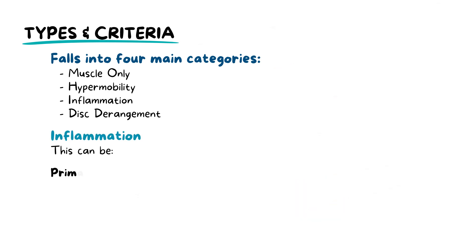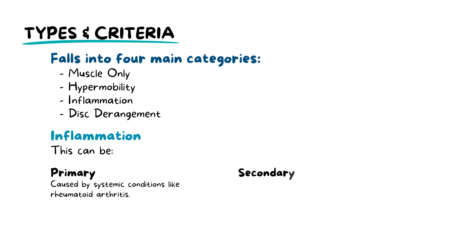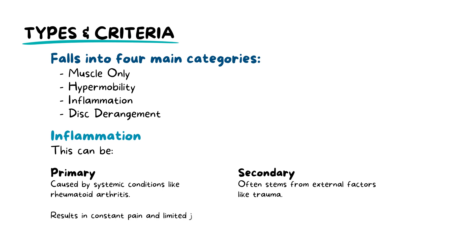Inflammation can be primary, caused by systemic conditions like rheumatoid arthritis, or secondary, due to external factors like trauma to the TMJ itself, resulting in constant pain and limited jaw movement.